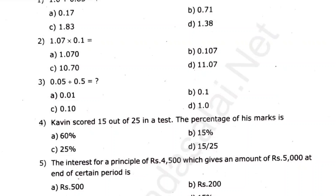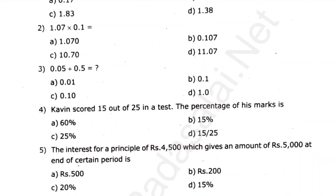You can find the simple interest on a principal of rupees 4,500, which gives an amount of 5,000 at the end of a certain period.